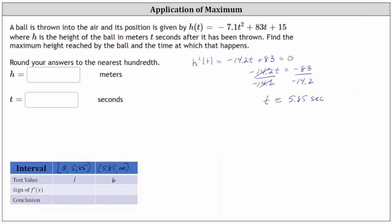Now determine the sign of h prime of one and h prime of six. h prime of one is equal to negative 14.2 times one plus 83, which we should be able to recognize is going to be greater than zero or positive. And that's all we need to know.